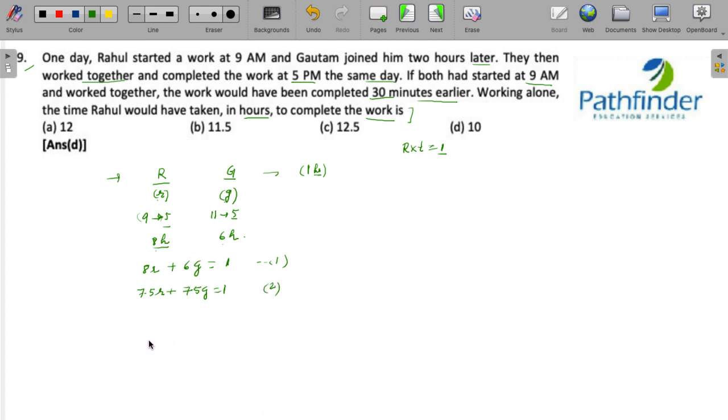equal to 1. So this gives you another equation. So to solve this equation, we multiply the first equation by 7.5 and the second equation by 6. What do you get? We have 60 times R plus 45 times